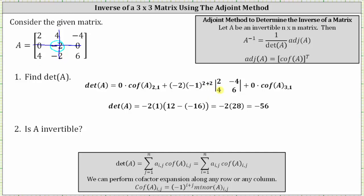Moving along to the third entry in row two, which is another zero, giving us plus zero times cofactor three comma one. Because we have a factor of zero, the product is zero. So simplifying, the first product and third product are both zero.